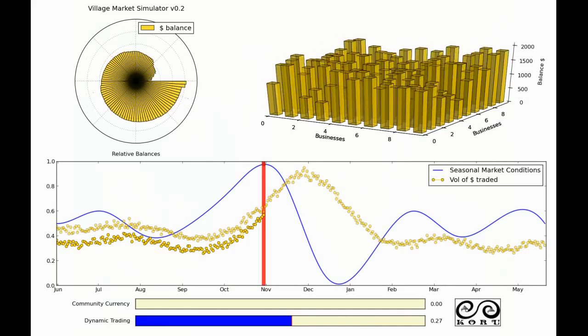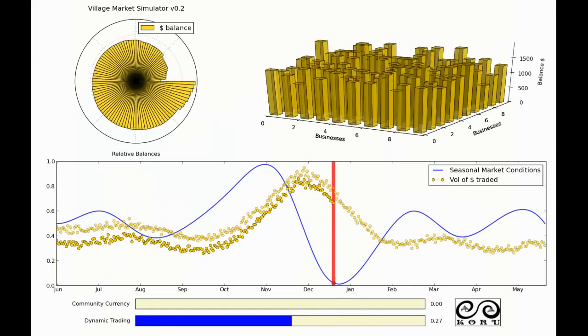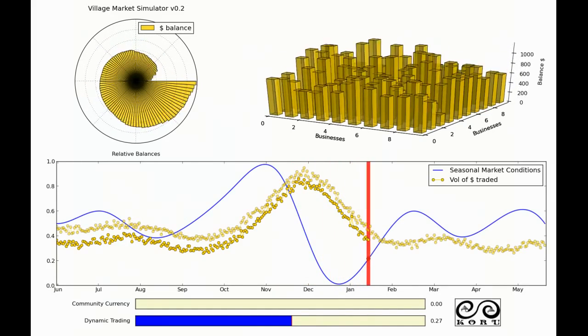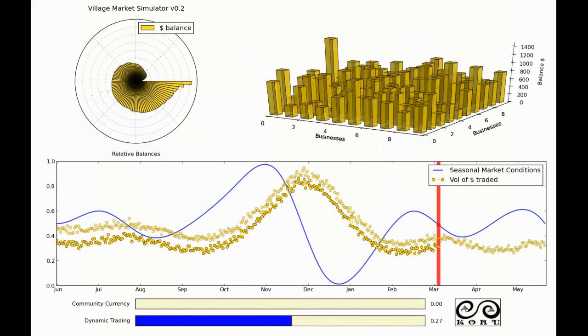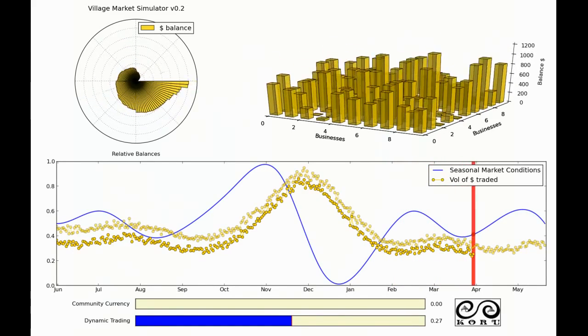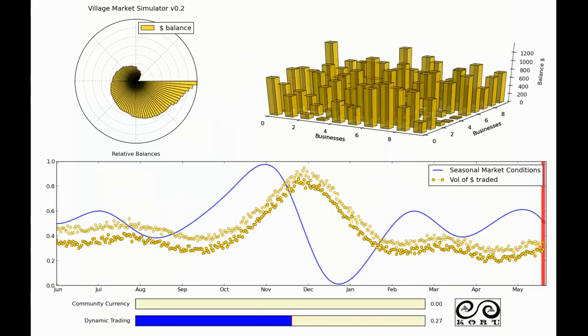In the upper left here I've plotted all the balances of each business around a circle just to look at comparative amounts of wealth in the community. So this is a fairly equal community. There's no bankers here, there's no interest bearing loans or anything like this. It's just a very typical market maybe say a hundred years ago.